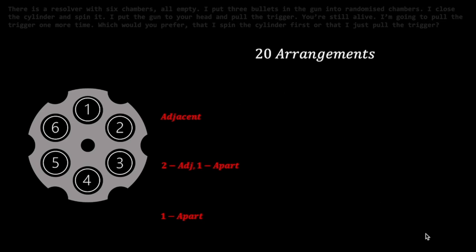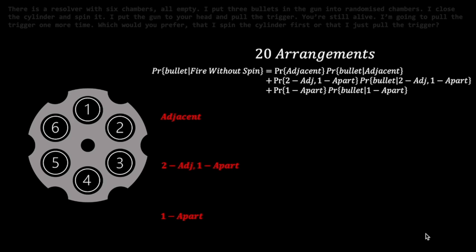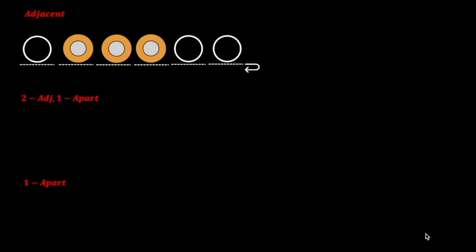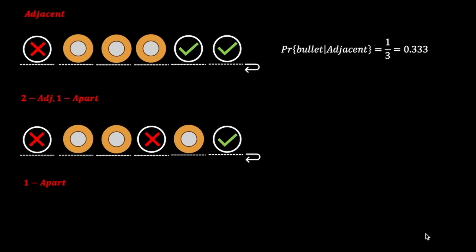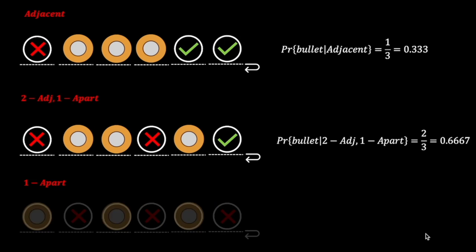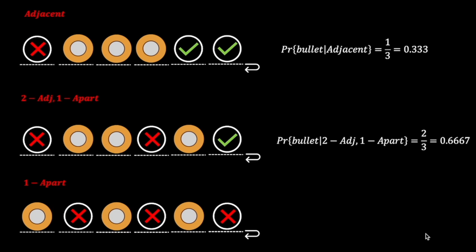The probability of encountering a bullet placed in three randomized chambers without a re-spin is the following sum product. For adjacent bullets, the first spin will have landed in three of the empty chambers; one will have a bullet coming up next, giving a conditional probability of 1 over 3. For two adjacents and another separated by one chamber, two out of three empty chambers will have a bullet coming up next, giving 2 over 3. For three bullets spaced one chamber apart, all three empty chambers will have a bullet coming up next, giving a conditional probability of 1.